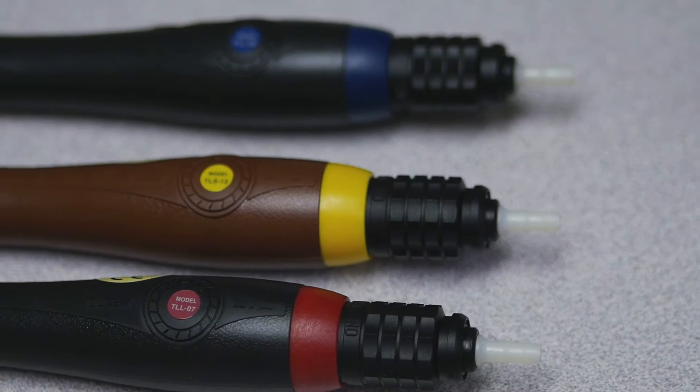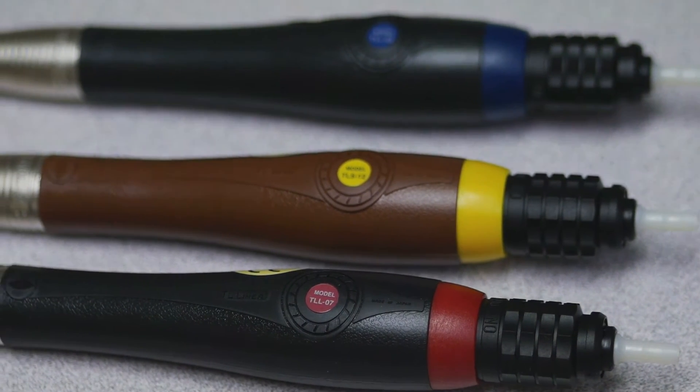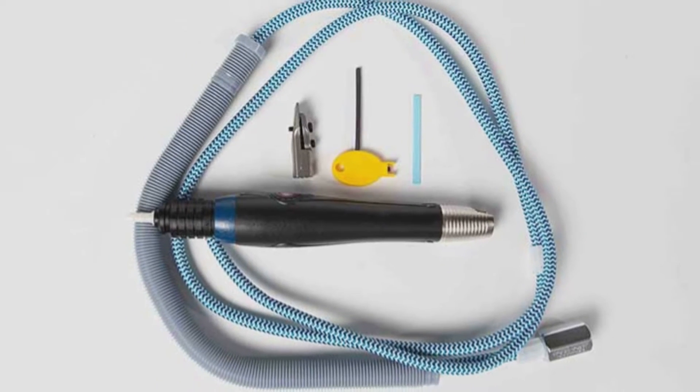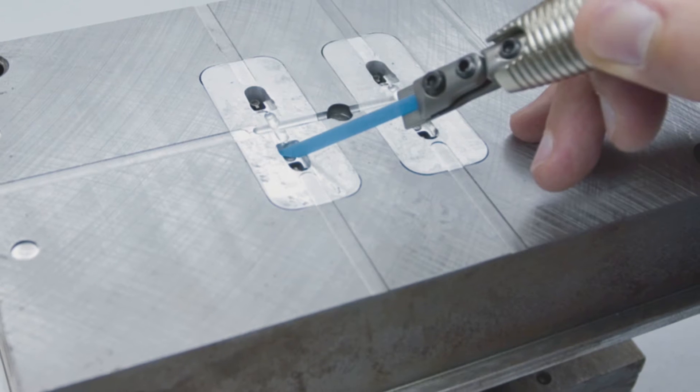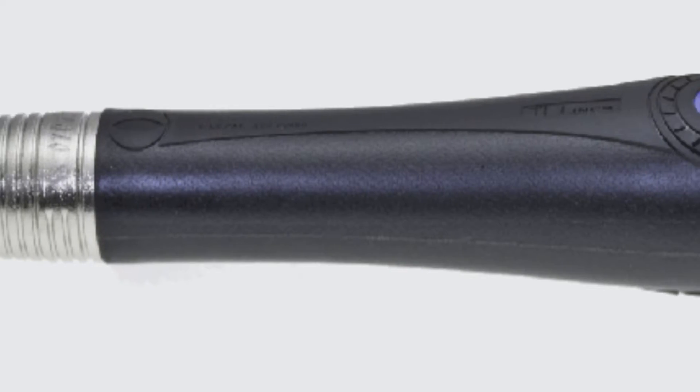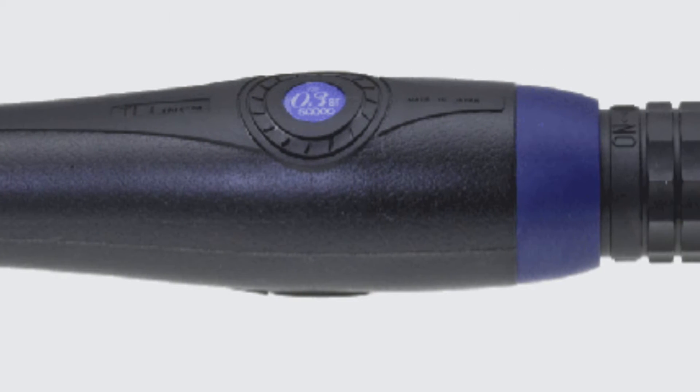Now let's take a closer look at each type of air profiler. We offer three different Turbo lap models: the TLL-03, the TLL-07, and the TLS-12. The TLL-03 is most commonly used on small molds with a lot of detail areas that need to be polished. This is due to a short stroke length of 0.3 millimeters and high RPM of 52,000.